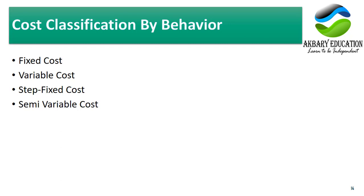Step fixed cost occurs when a fixed cost remains constant up to a range of activity, then jumps to a higher fixed level. For example, once a classroom reaches 50 students, a 51st student requires an additional classroom with its own fixed rent. So up to a range of activity there is one fixed cost, and beyond that range the fixed cost steps up — that is why it is called step fixed cost.